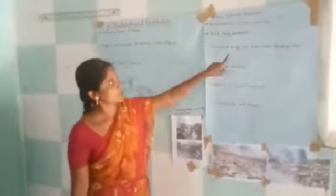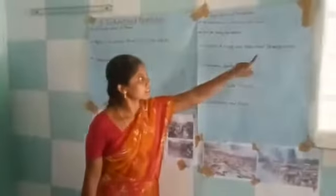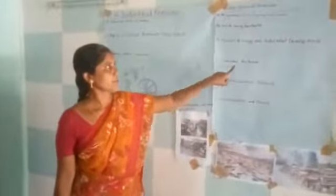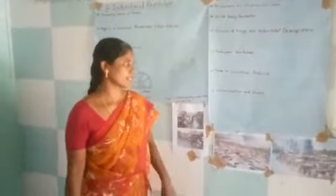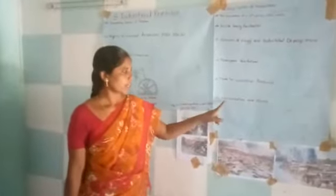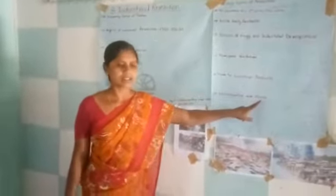Inside early factories. Next topic is source of energy and industrial development. Next is transport revolution. Trade industrial products. Now, the present topic is urbanization and slums.